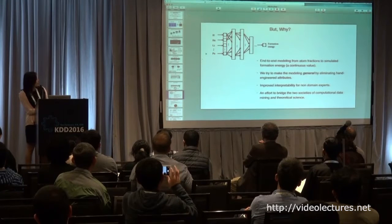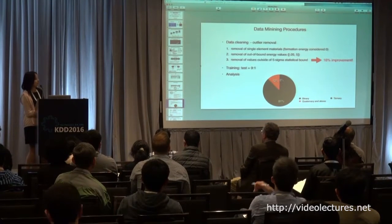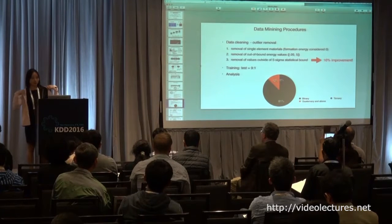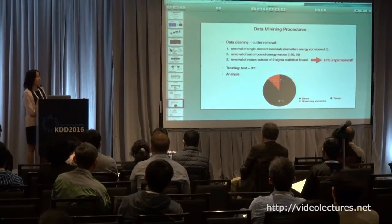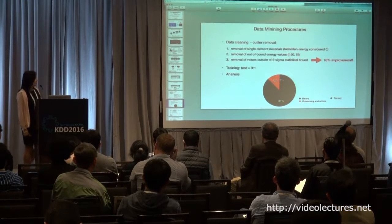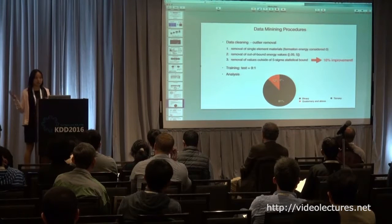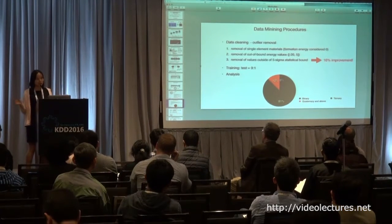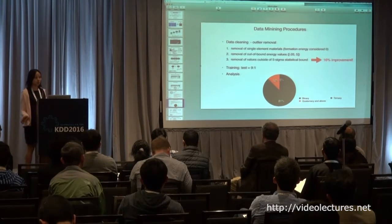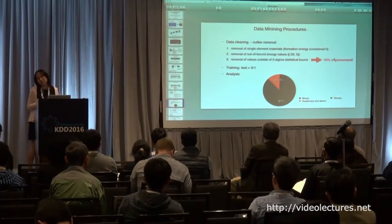Before showing results, here's our data processing procedure. Despite trends in deep learning to minimize data intervention, we found preprocessing still matters. We remove single-element materials since they don't have formation energy, remove out-of-bounds energy compounds that were wrongly calculated, and remove values outside a five-sigma statistical bound. After all this removal, we see about a 16% improvement.